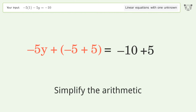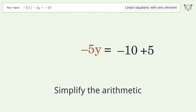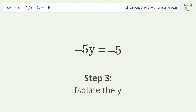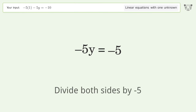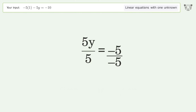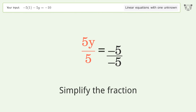Simplify the arithmetic. Now isolate the y by dividing both sides by negative 5. Cancel out the negatives, then simplify the fraction.